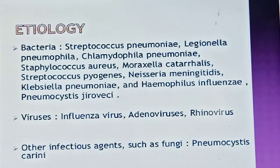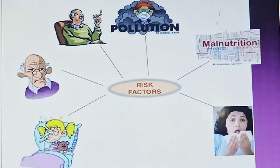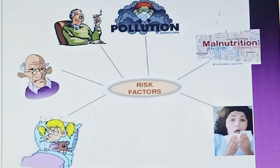If we talk about the general symptoms or risk factors of pneumonia — the general symptoms are called upper respiratory tract infection. This includes infection of the throat, larynx region, and nose. Symptoms in this area include sneezing, sore throat, and cough, often followed by a high fever — sometimes as high as 104 degrees Fahrenheit — along with shaking chills and a cough with sputum production.